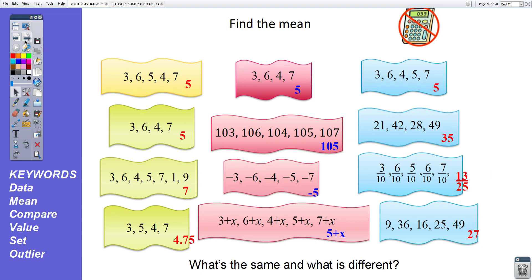Okay, let's have a look. Here are our answers. Right, going down this side first. Five numbers total 25 divided by 5 is 5. Four numbers total 20 divided by 4 is 5. These numbers, the mean is 7 and these numbers, the mean is 4.75. Well, if you noticed, these and these are the same, so the mean is still 5. Now, this was an interesting question. 103, 106, 104, 105, 107. The mean is 105.